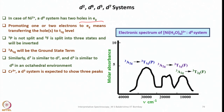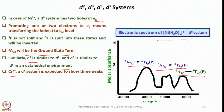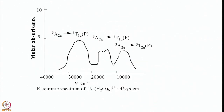The ³P term is not split because p orbitals are triply degenerate — designated as t₁u in ligand field theory — so they remain degenerate with the same energy. The ³F term is split into three states, and will be inverted, so ³A₂g will be the ground state term. Similarly, D⁷ is analogous to D², and D³ is analogous to D⁸ in an octahedral environment. Chromium³⁺ (D³) is expected to show three peaks. The spectrum of hexa aqua nickel²⁺ (D⁸) shows three transitions as expected.